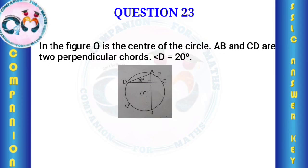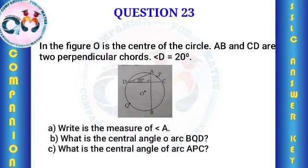AB and CD are two perpendicular chords of a circle. Angle D equals 20 degrees. What is the measure of angle A? What is the central angle of arc BQD? What is the central angle of arc APC?